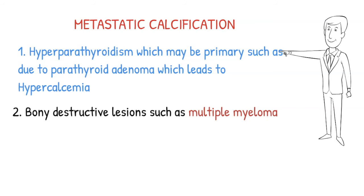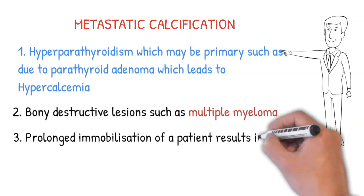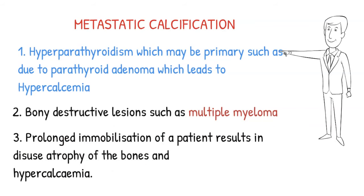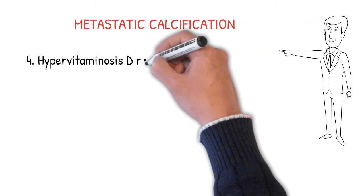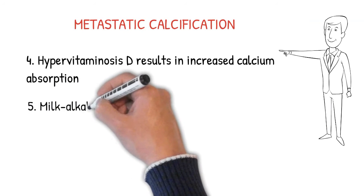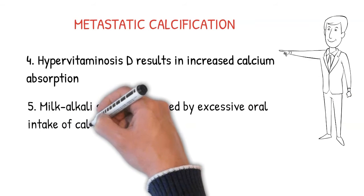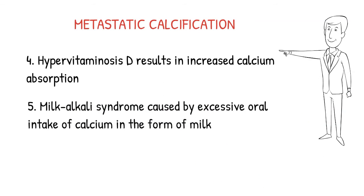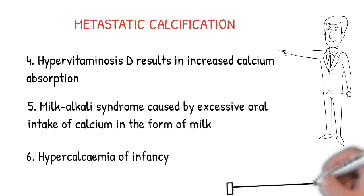Other causes of hypercalcemia include bone-destructive lesions, bone cancers like multiple myeloma, and metastatic carcinoma — in which calcium is broken down and increased in the blood. Prolonged immobilization leads to atrophy of bones, also increasing blood calcium. Hypervitaminosis D — vitamin D is responsible for calcium absorption from the intestine and kidney. Milk-alkali syndrome involves excessive oral intake of milk, providing a high amount of calcium. Hypercalcemia of infancy is another cause.